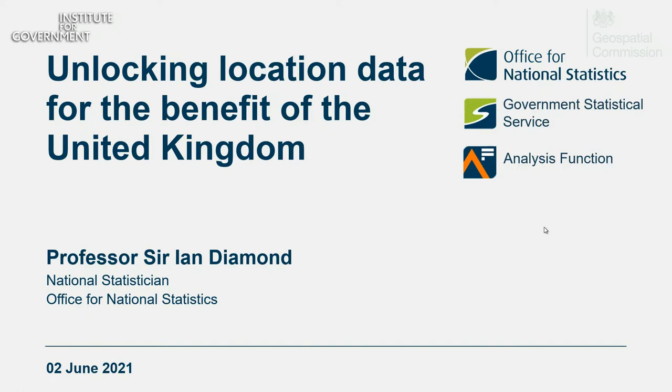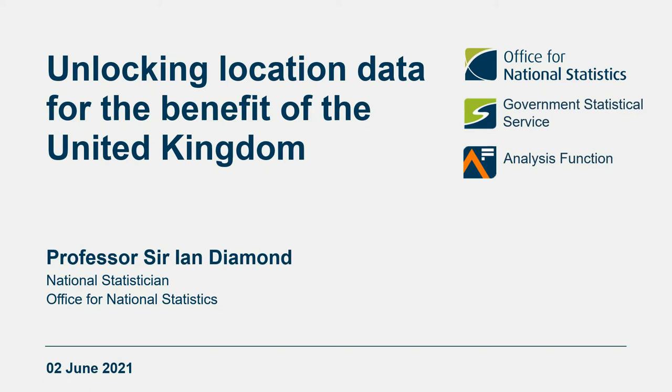Thanks very much — it's a privilege to be here. The importance of spatial data to ONS is absolutely critical, for no other reason than that society lives in groups. Although I'm going to talk about data tonight, it's also worth remembering that it's critical to bring the spatial element into the analysis. The work of multi-level models — on which I spent a lot of my career — is incredibly important because people observations in groups are correlated together, and we need to take that into account. It's also a very good reason for why we need to look at location data.